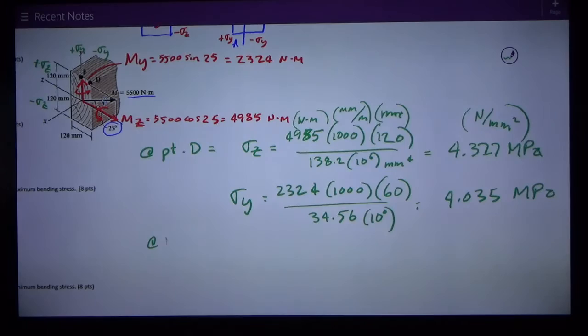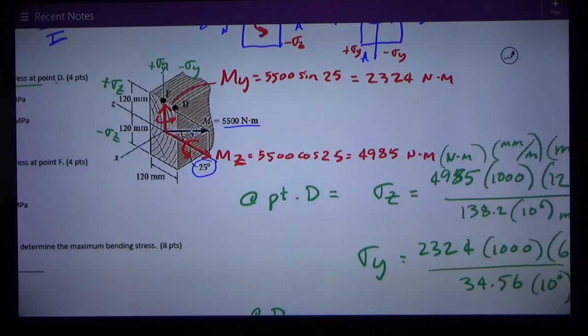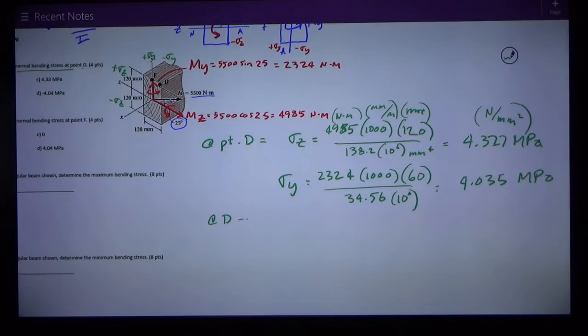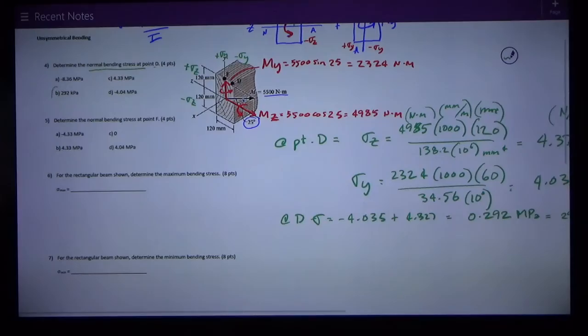Let's look at the plus and minus. At point D, looking at the quadrants, I've got negative σy and positive σz. So I've got negative σy, negative 4.035 and positive σz because it's above the z neutral axis, 4.327 which gives me 0.292 megapascals which is equal to 292 kilopascals, that's answer B.